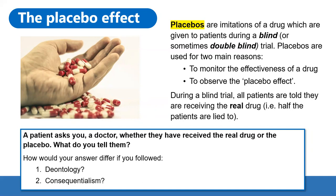We're going to give you a couple of minutes now just to pause the video and have a think about this question. Think about what is right in this situation, what is classed as being inherently right, and if you were following deontology, how you would go about ensuring you're making an ethically and morally right decision. And also, when you're following consequentialism, what the outcomes and consequences of that decision would be — that's what would guide you towards that decision.